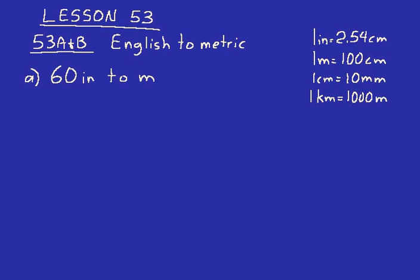So remember when you're doing a unit multiplier problem, you always write down what's given first. And so we'll say 60 inches, and then we want to convert that to meters. So how would we do that? Well, remember that the English to metric conversion factor that you need to go from English to metric is 1 inch equals 2.54 centimeters. So we'll convert from inches to centimeters first, then we'll go centimeters to meters.